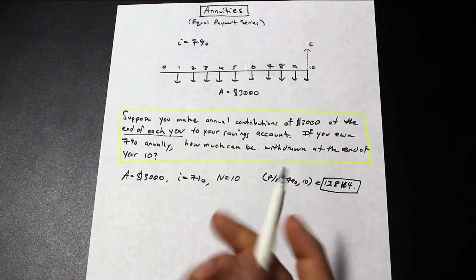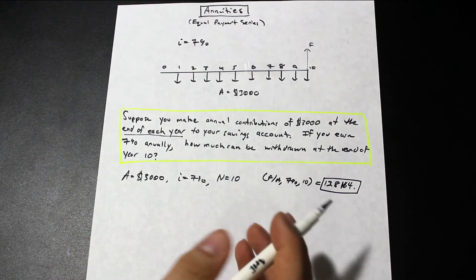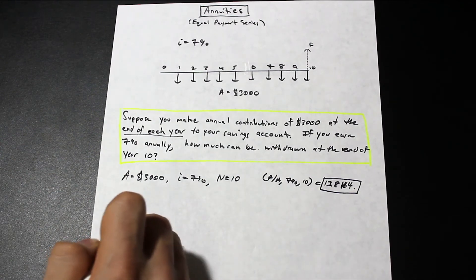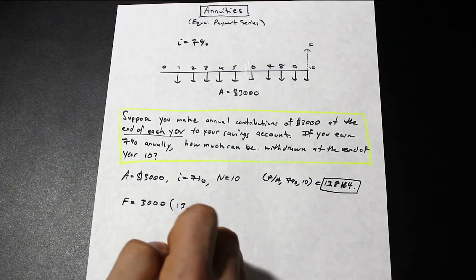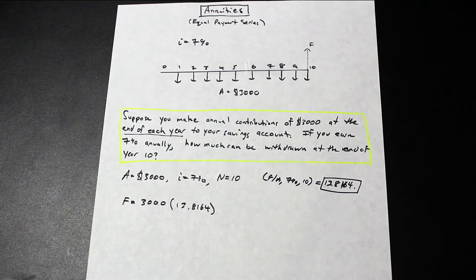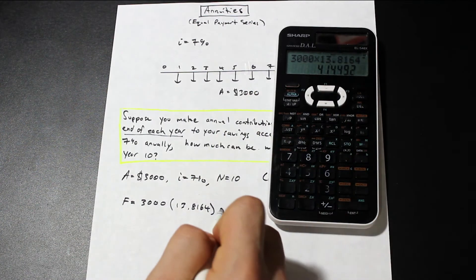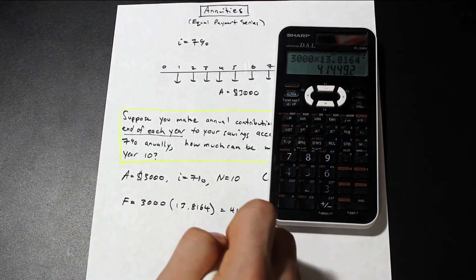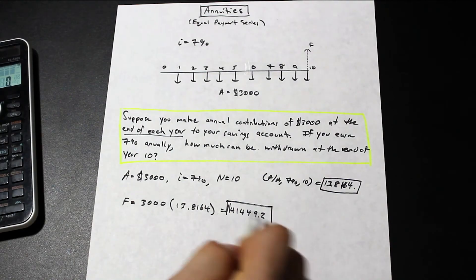So now that we have the interest factor, all we need to do is multiply that by our A, and that should give us our F. So we can say that F is equal to $3,000 times 13.8164, and that's equal to $41,449.2, and that's the answer.